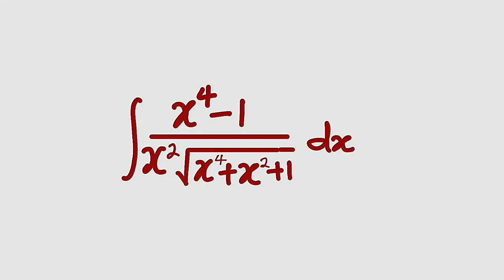Hello, good dear viewers. In this tutorial, we are going to integrate the function x to the power of 4 minus 1 divided by x squared multiplied by the square root of x to the power of 4 plus x squared plus 1, with respect to x.